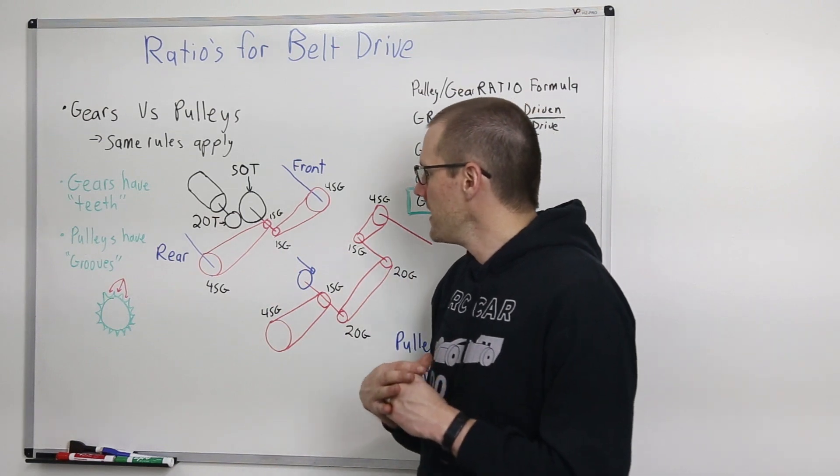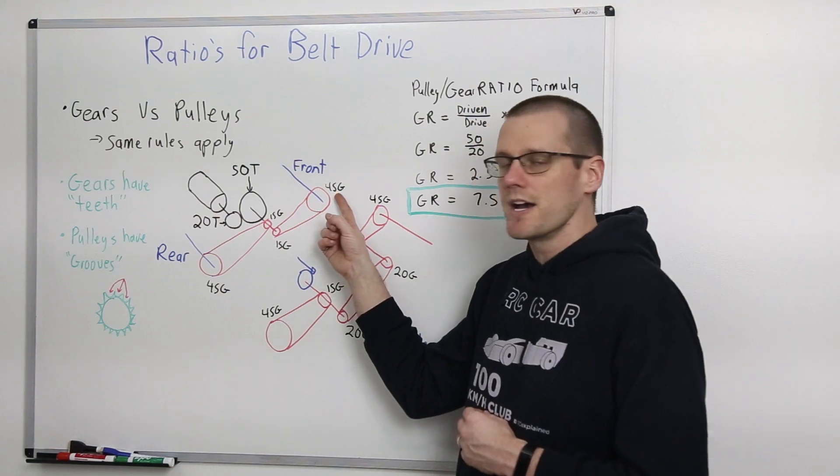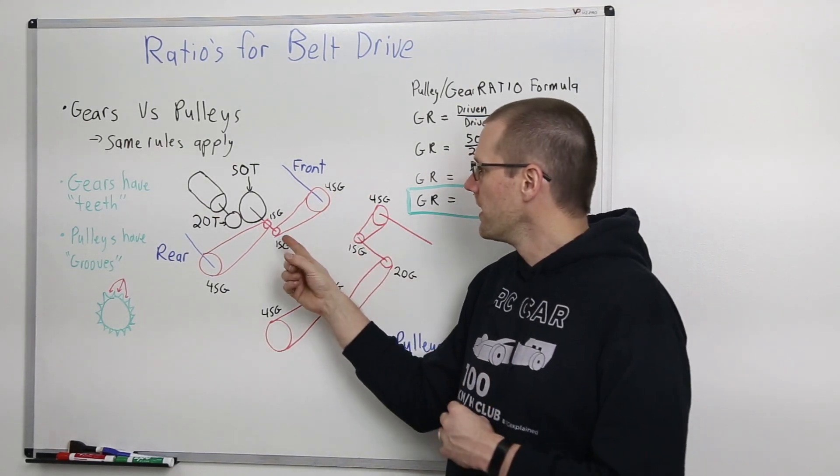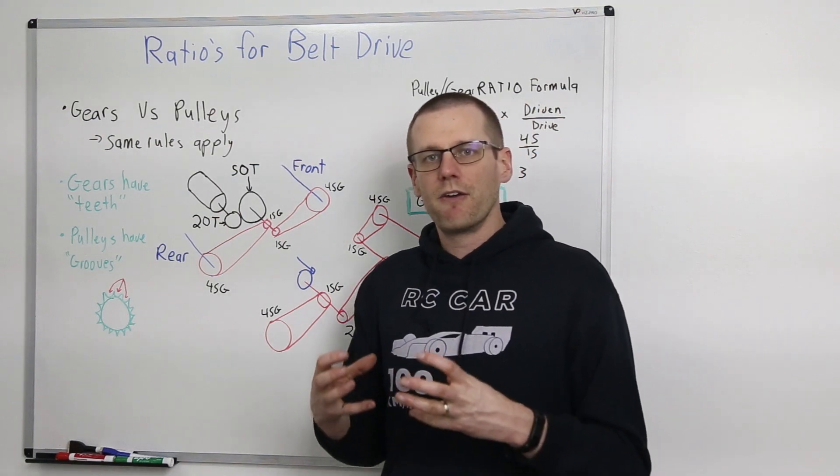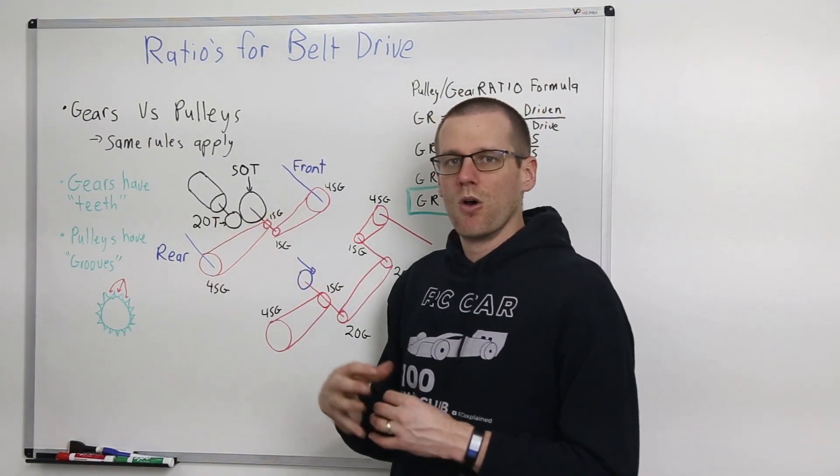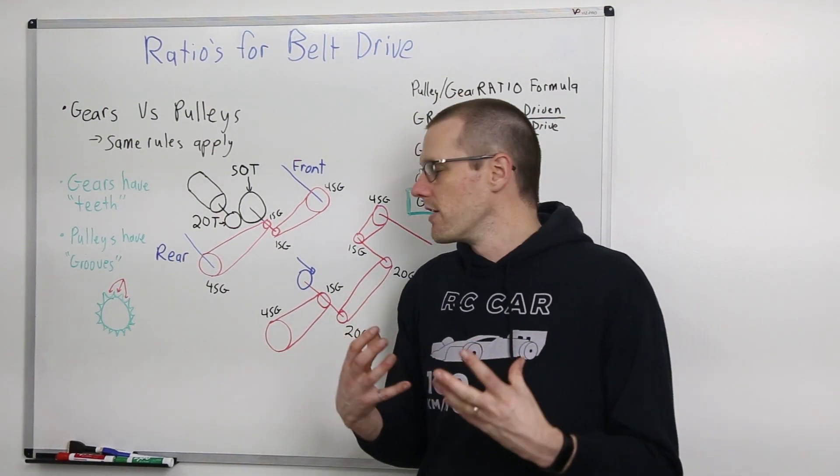In our case, it is. We know that because we see that this has a 45 groove. This also has a 45 groove pulley, and then both the ones on the main shaft are 15. Therefore, we only need to do the calculation for one of them, and we have the overall gear ratio for our system.